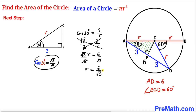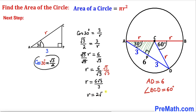Now let's rationalize by multiplying numerator and denominator by square root of 3. This gives us 6 times square root of 3 divided by 3, which reduces to 2 times square root of 3. So our radius r equals 2 square root of 3 units.